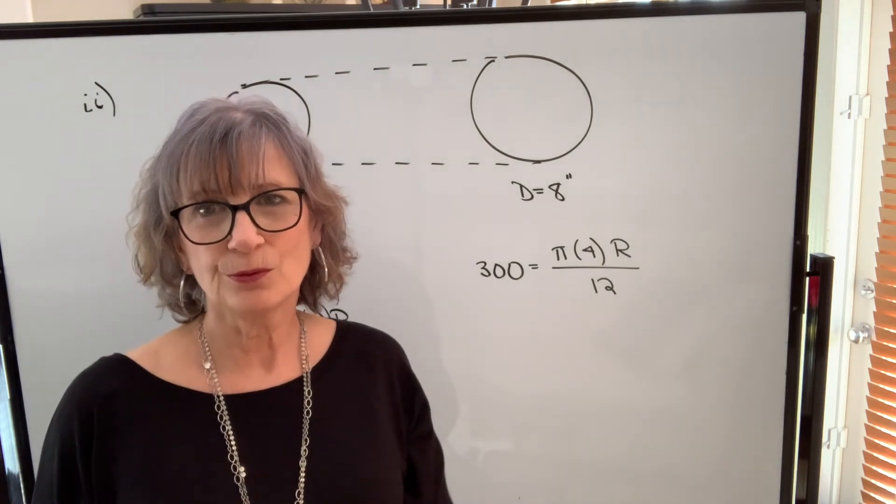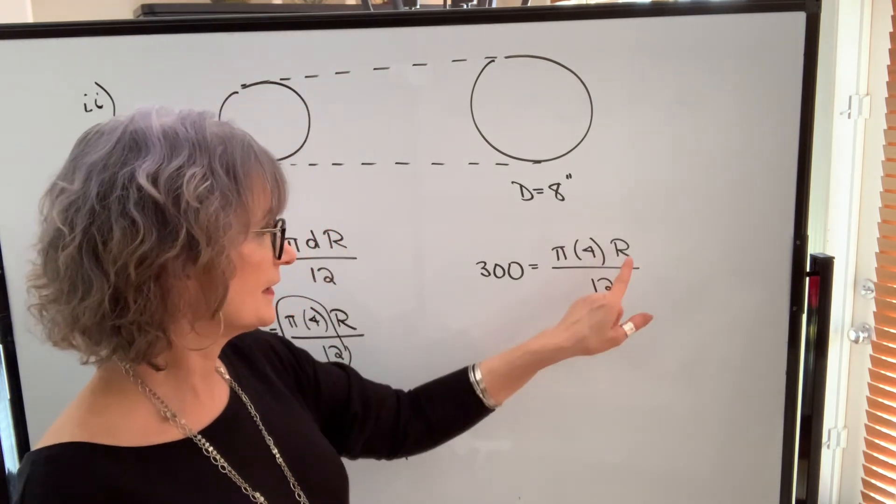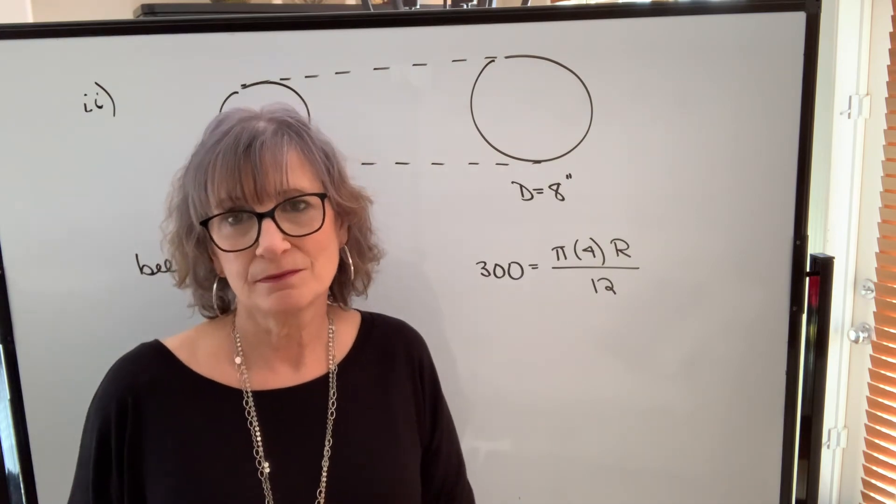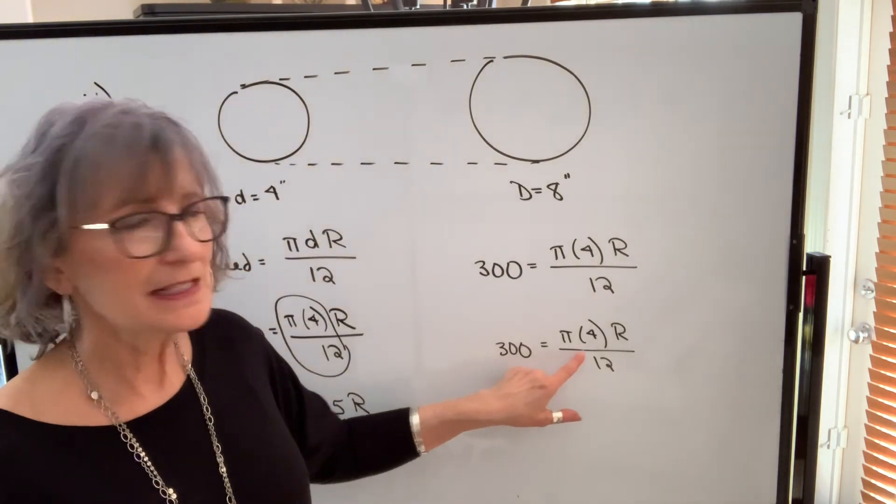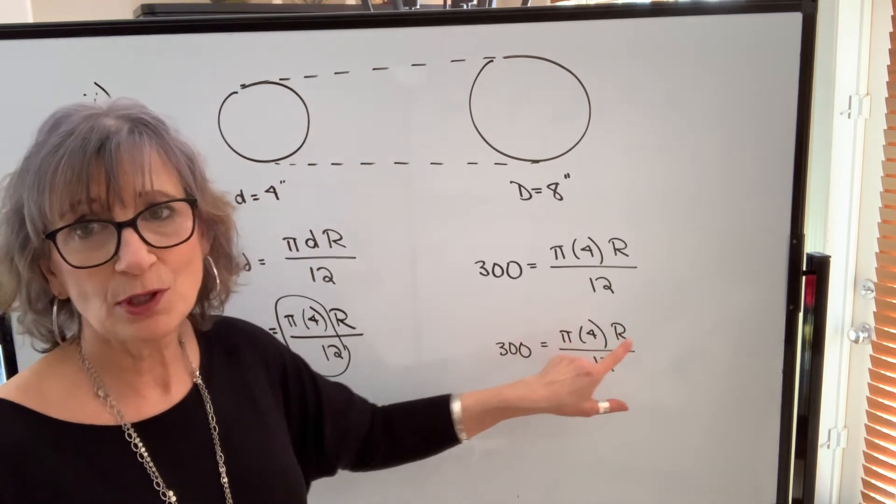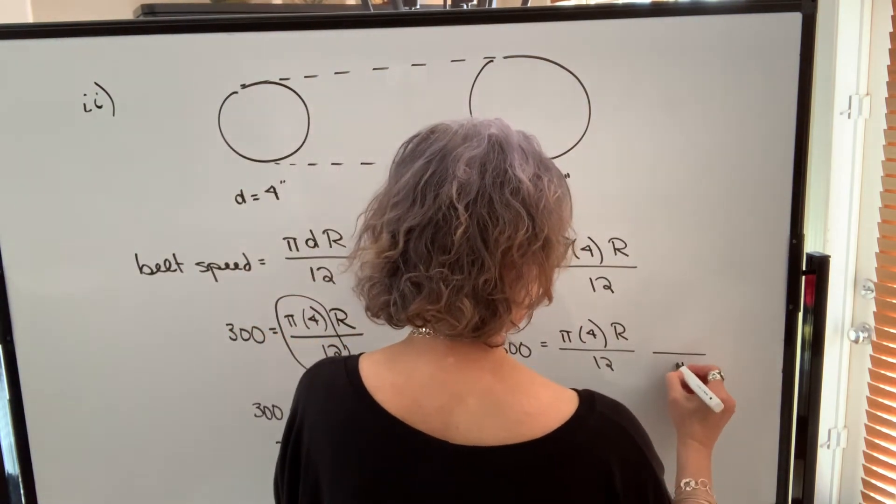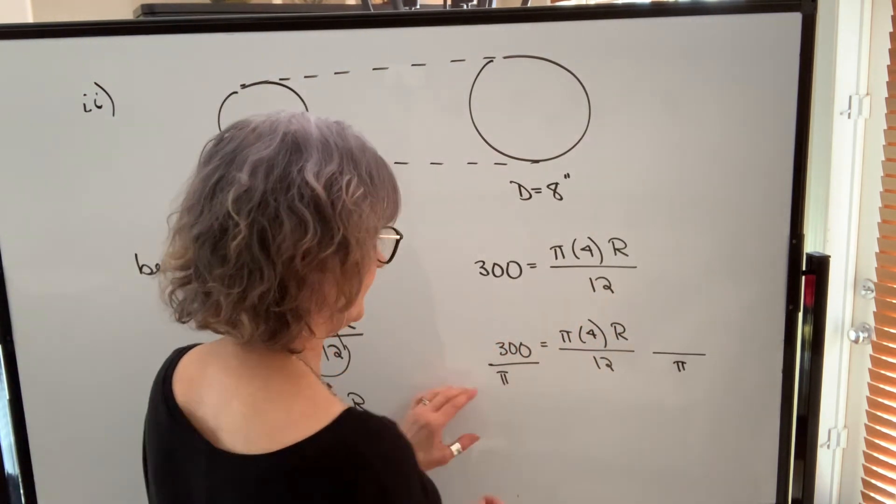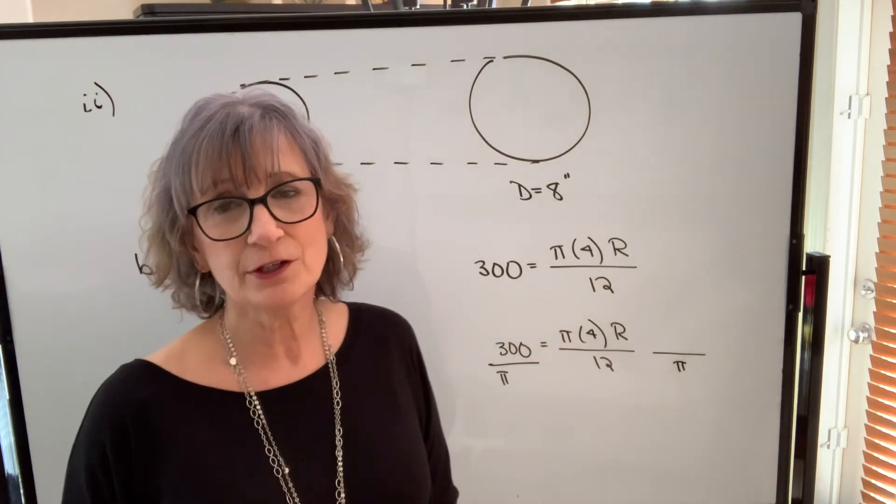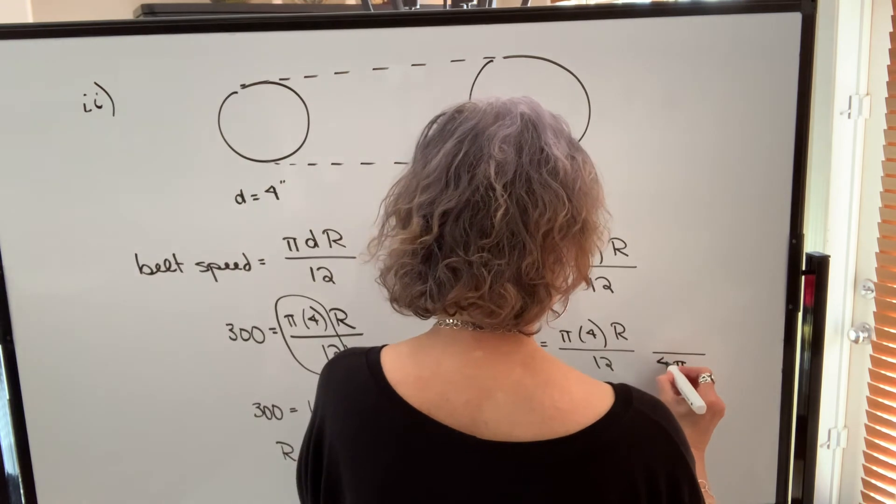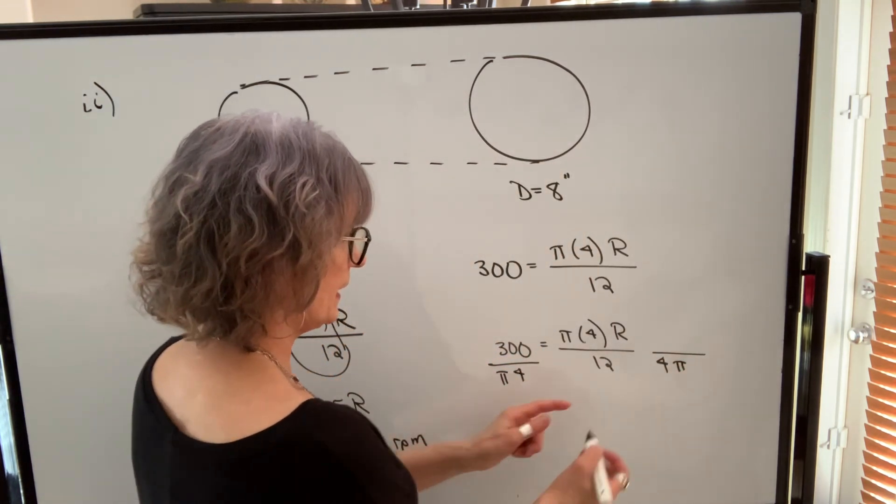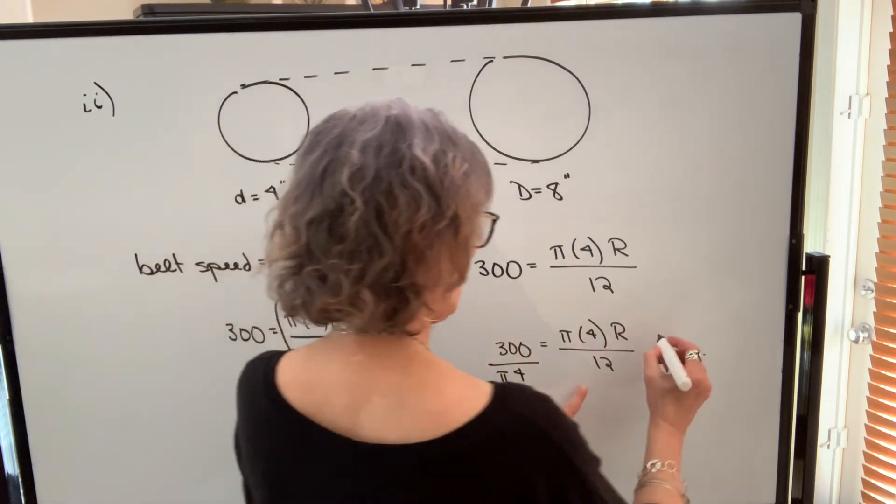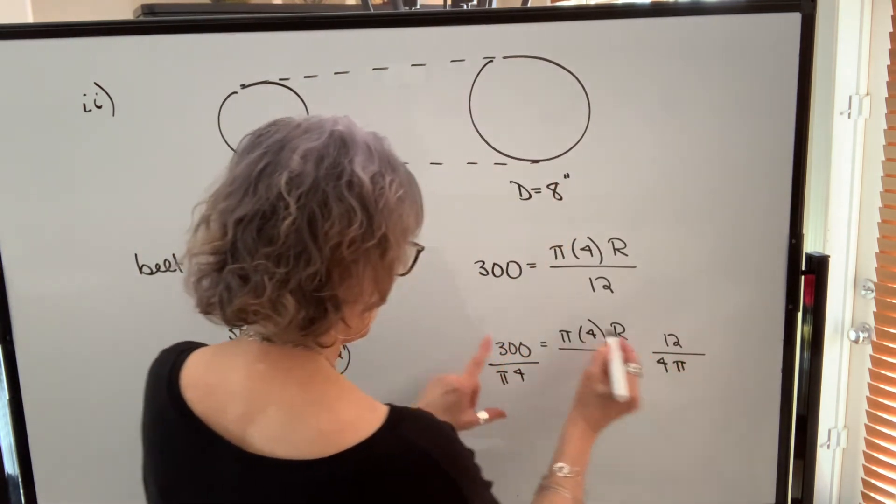When you're trying to get a variable or a letter by itself, in this case we want to get R by itself, to get rid of any other numbers that are with it, you perform the opposite or the inverse operation. So in this case, to get R by itself, I want to get rid of pi. Pi is being multiplied, so to get rid of it, I divide by it. Whatever I do to this side of the equation, I have to do the same thing to the other side. So I'm going to divide by pi. 4 is being multiplied to my variable, so in order to get rid of it, I divide by 4. I also divide this side by 4. 12 is in the denominator, which means division by 12. So the opposite of division by 12 is multiplication by 12. So if I multiply this side by 12, I also have to multiply this side by 12. What will happen on this side is the 12 will cancel, the factor of 4 will cancel, pi will cancel, and I'll simply be left with R.